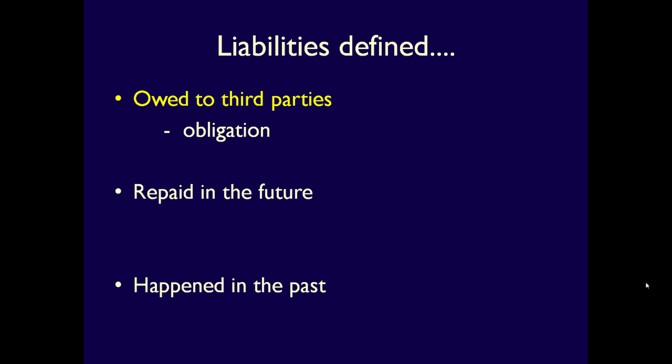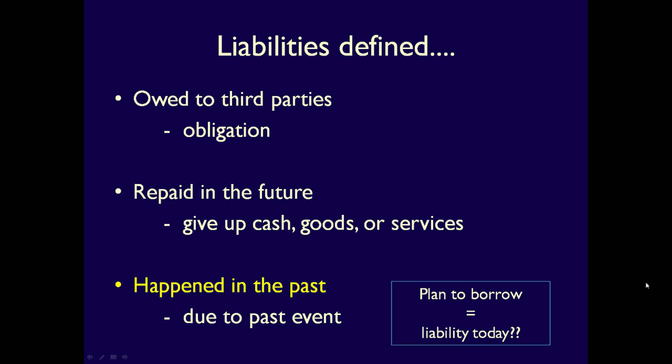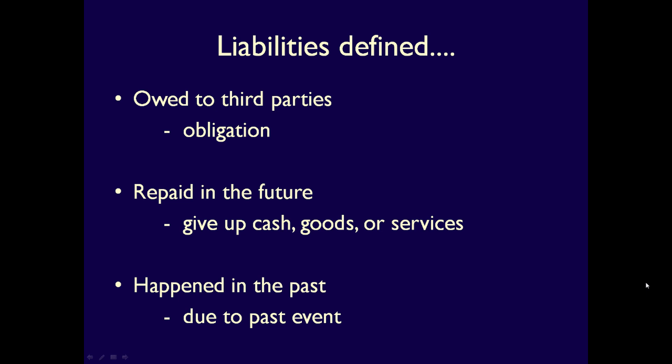A personal example of a liability is the student loan you might owe as a debt to the bank. Second, liabilities will be settled in the future through the giving up of either cash, goods, or services. A student loan will be settled through the payment of cash, but other obligations might be settled by providing a service or delivering a good. Third, liabilities are due to past events — if you plan to borrow money next year, that's not a liability yet and you can't record it. To summarize, everything that a company owes to a third party is considered a liability: an obligation due to a past event that the business will settle in the future.